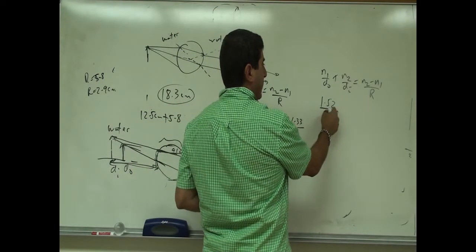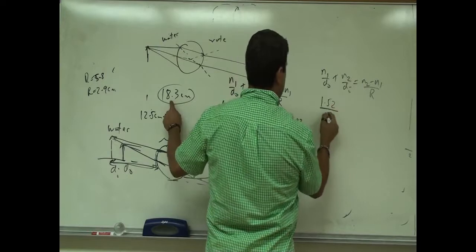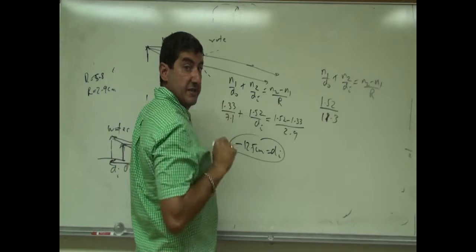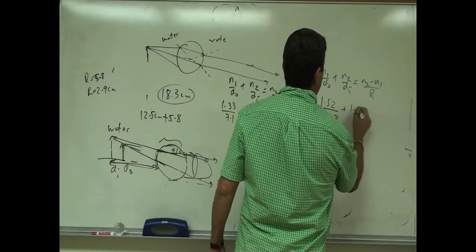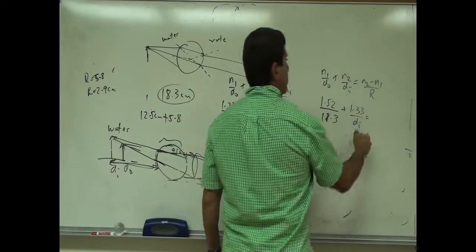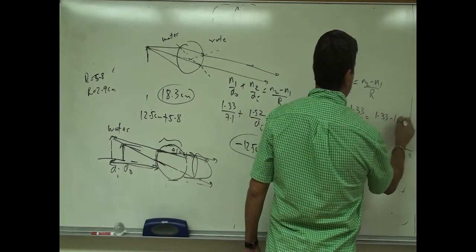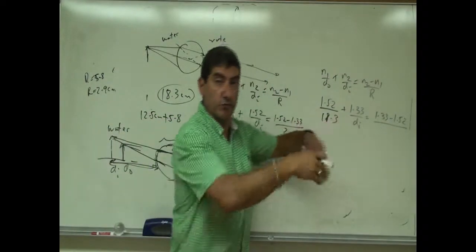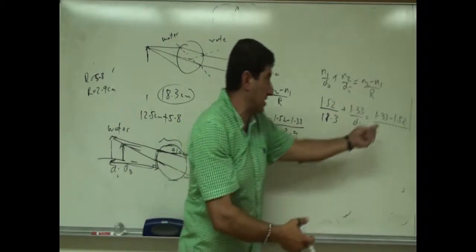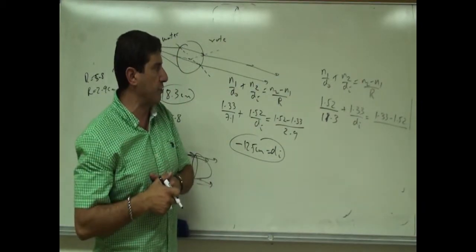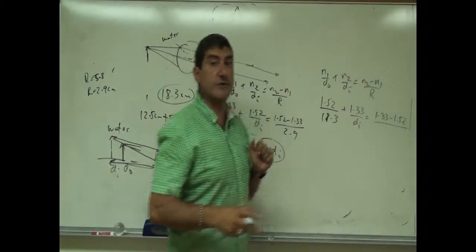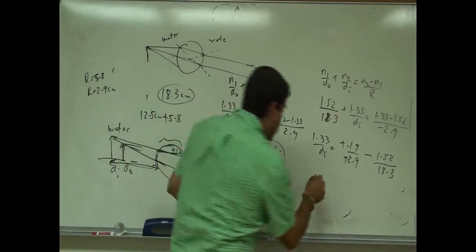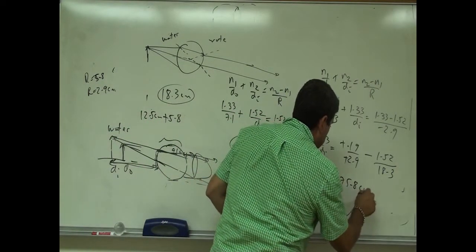For the back surface in water: 1.52/18.3 + 1.33/DI = (1.33 − 1.52)/(−2.9). The radius of curvature is negative 2.9 for the same reason as before. Solving gives DI = −75.8 centimeters. That means the lens was not able to converge the image — the final image ends up 75.8 centimeters to the left of the back side of the lens, a virtual image.